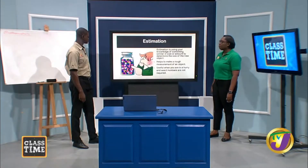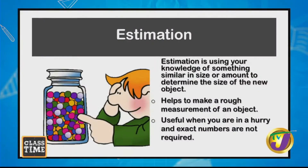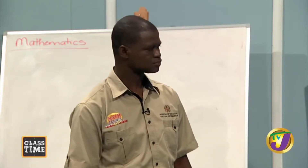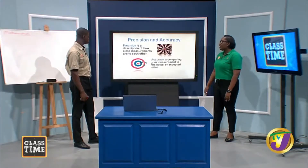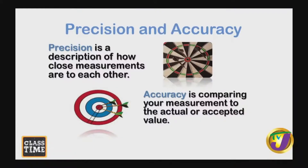Why do we estimate? Sometimes you just really need an estimate — a guesstimate. Although measurement is very important, there are times when you just need an estimate. It is very good that your estimate is close to the actual measurement. Precision is a description of how close measurements are to each other, while accuracy is comparing measurements to the actual or accepted value. You need both precision and accuracy.